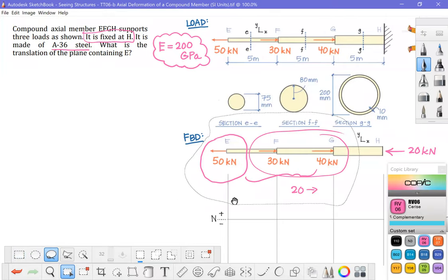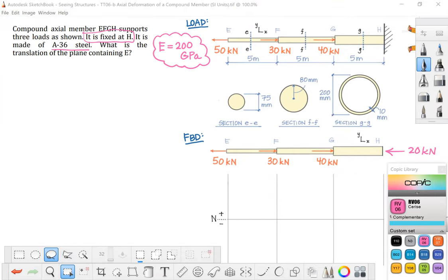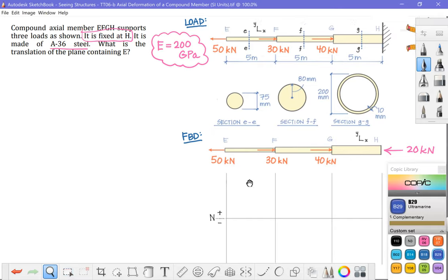If you wanted to do this the mathematically pure way, you could do a summation of forces in the x direction, but reach the same conclusion. Right, now that I've got my free body and that unknown reaction solved for, I'm ready to go into my normal force diagram.